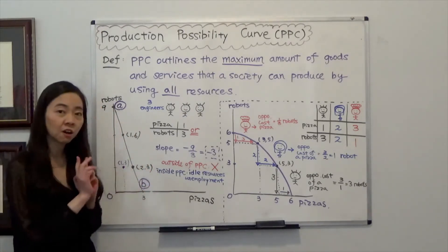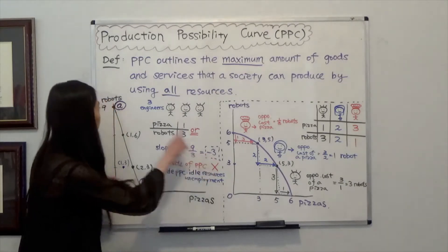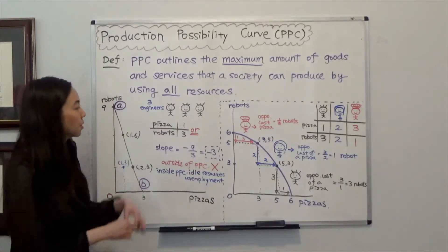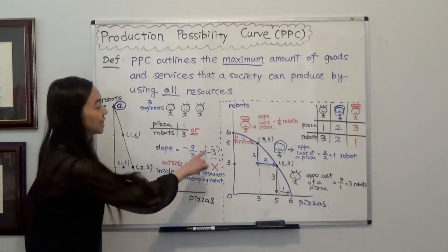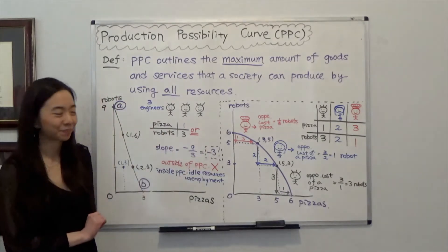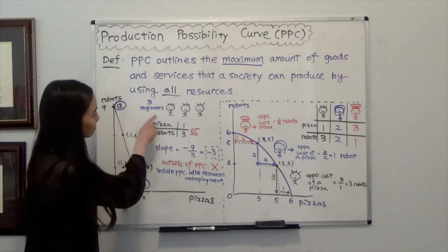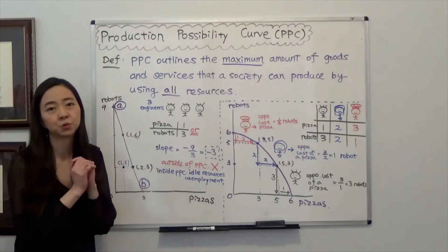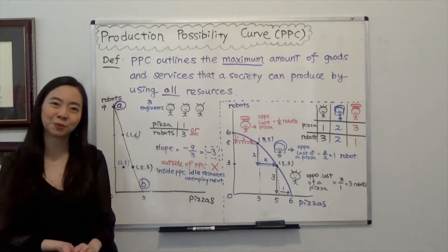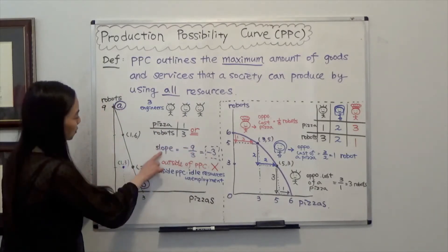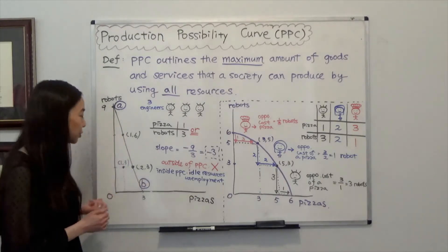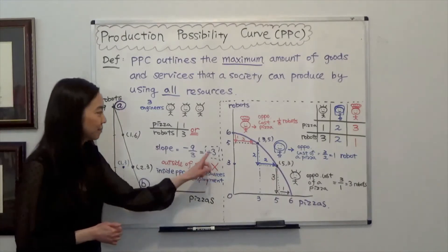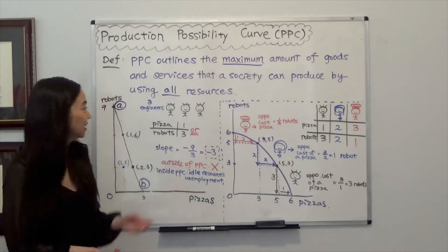The opportunity cost of one pizza is equal to 3 robots. The reason you see a negative sign is this: to produce one pizza, you have to sacrifice 3 robots. For each engineer, if you are producing one pizza, then you are not producing robots, and therefore you sacrifice 3 robots. So the slope of the Production Possibility Curve tells you the opportunity cost of one pizza in terms of robots — in this case, 3 robots.